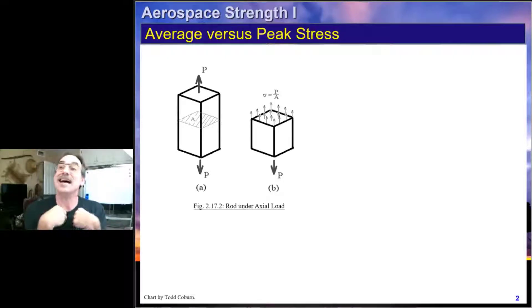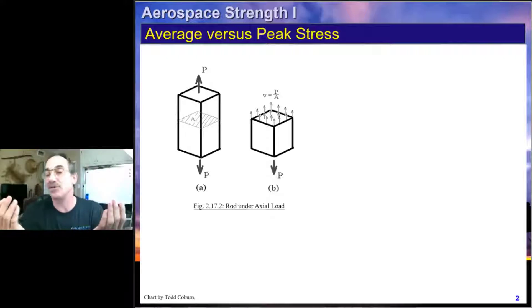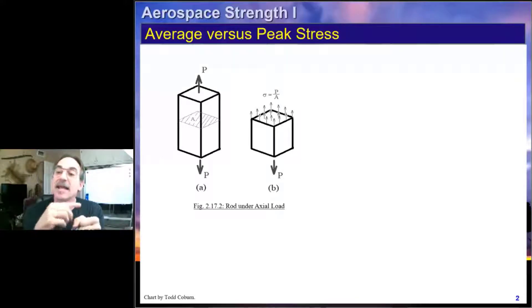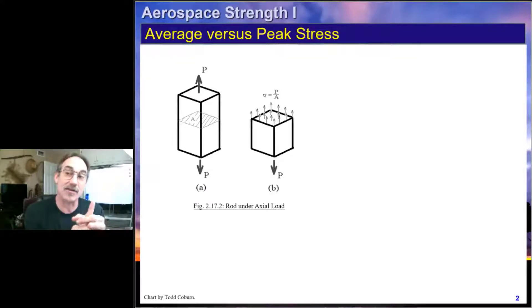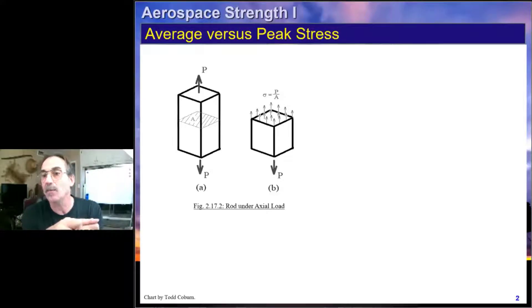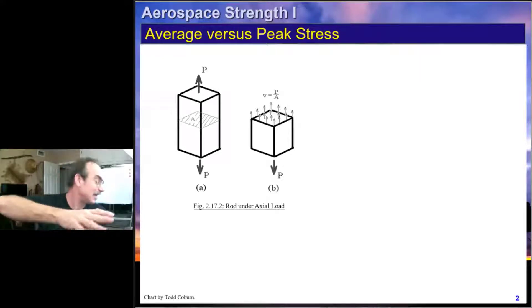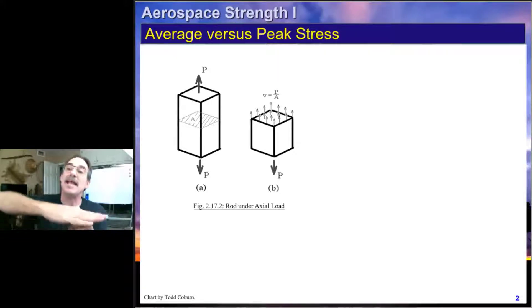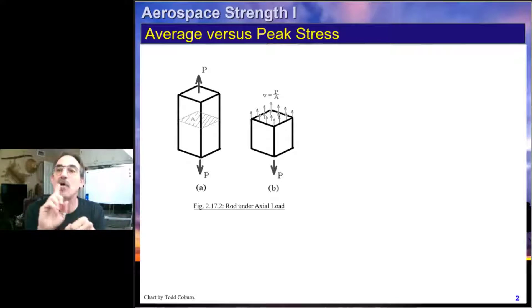That doesn't cover everything — in the next lecture we're going to learn about shear, when the load is parallel to the area. That gives us our two major ways to evaluate load: perpendicular to the area or parallel to the area. We have allowables for perpendicular — that's F-TU and F-CU — and for parallel that's F-SU, our shear allowable. Torsion is just a parallel stress, which means it's a shear stress. Bending causes normal stresses, which are perpendicular stresses.